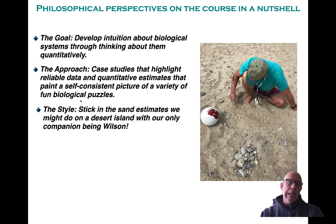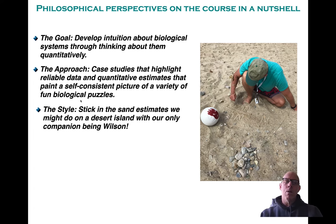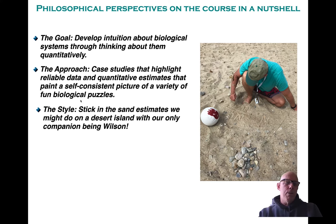For example, the mass of the Sun. With sufficient thought and a few facts — like the distance between the Earth and the Sun, or the period of the year — you can figure out the gravitational constant and from that the mass of the Sun. The way I think of these things is: you are completely isolated, there's no Google, no iPhone — simply you, your brain, and your buddy Wilson. You hold him up, pose a question, and try to develop an intuition for the scales of a thing.